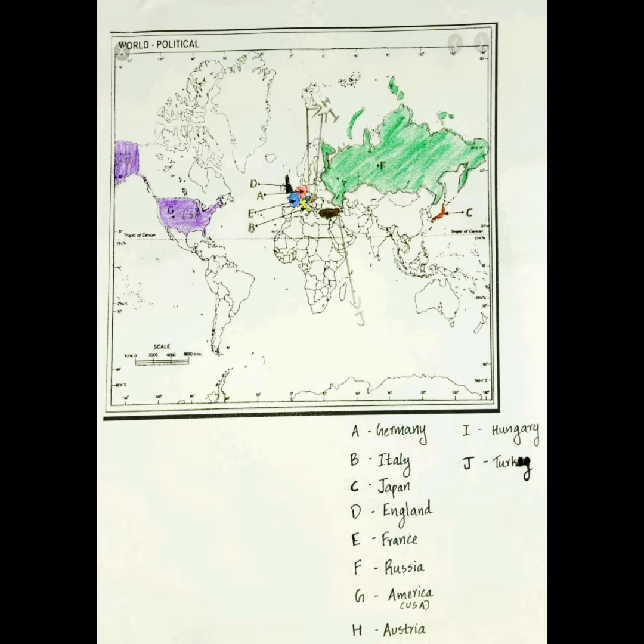Another group was Axis Powers. It includes Germany, Italy, and Japan.